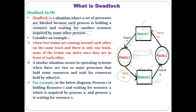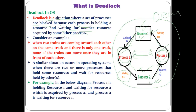Neither Process 1 nor Process 2 will be able to proceed. Process 1 will not be completed until it gets Resource 2, and Process 1 will not release Resource 1 until it gets Resource 2. Similarly, Process 2 will not release Resource 2 until it gets Resource 1. Neither process releases its allocated resources, so neither can proceed — that situation is called the deadlock situation.